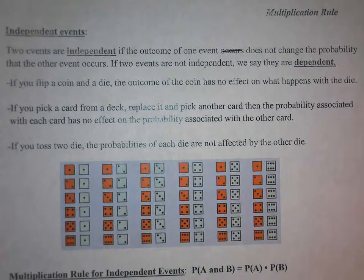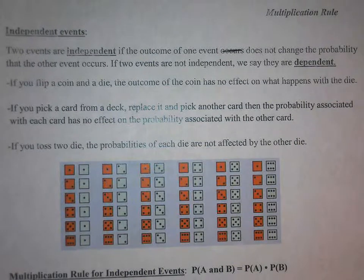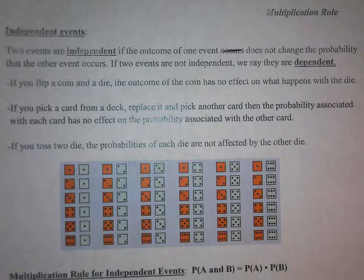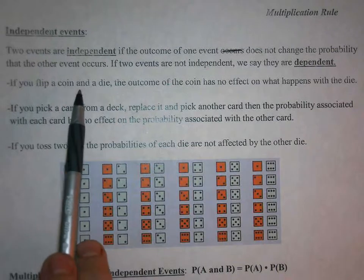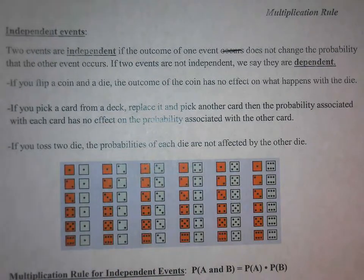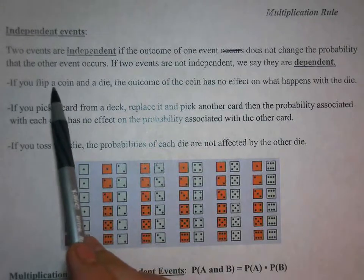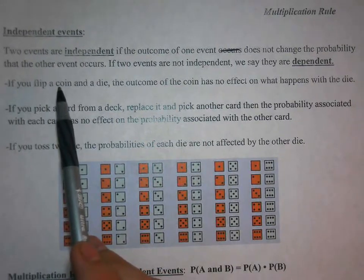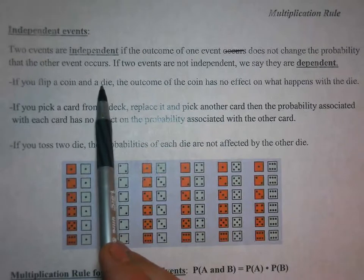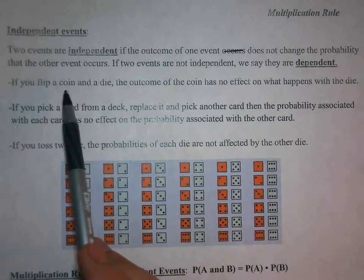Two events are independent if the outcome of one event does not change the probability that the other event occurs. If two events are not independent, we say they are dependent. So if you flip a coin and a die, the outcome of the coin has no effect on what happens with the die. Whether the coin was heads or tails, the die does not care what the outcome of the coin was.